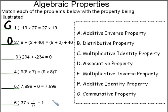In number 3, we're adding a negative number to 234, and we're getting 0. In number 3, that property is called the additive inverse property, which is letter A.